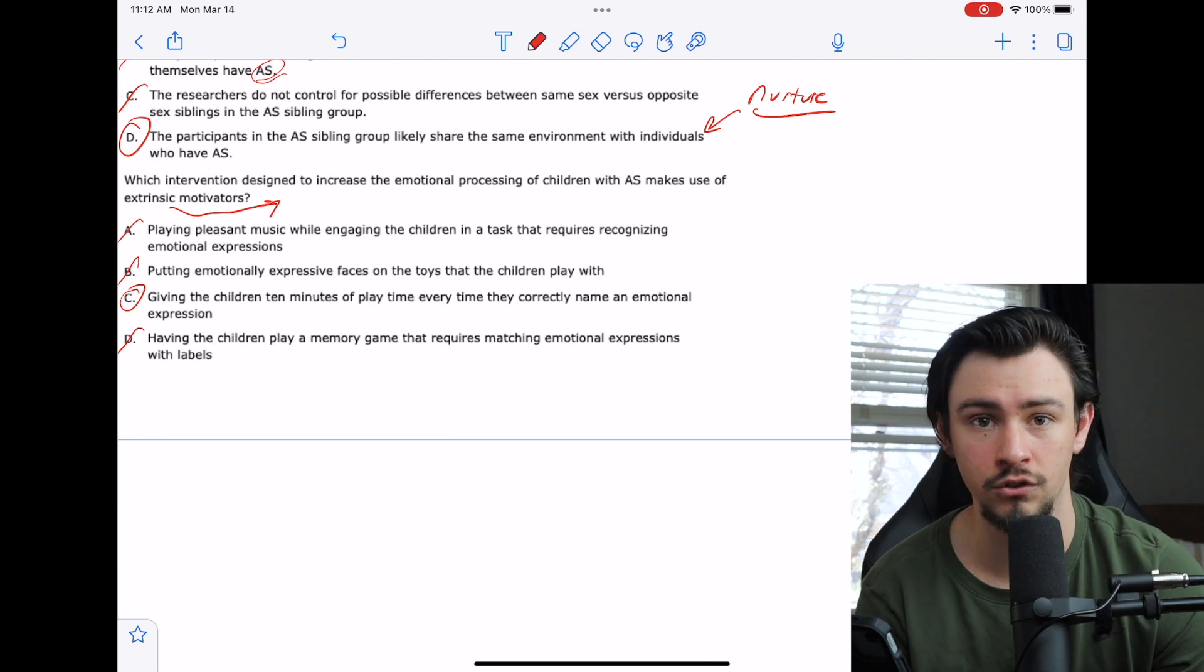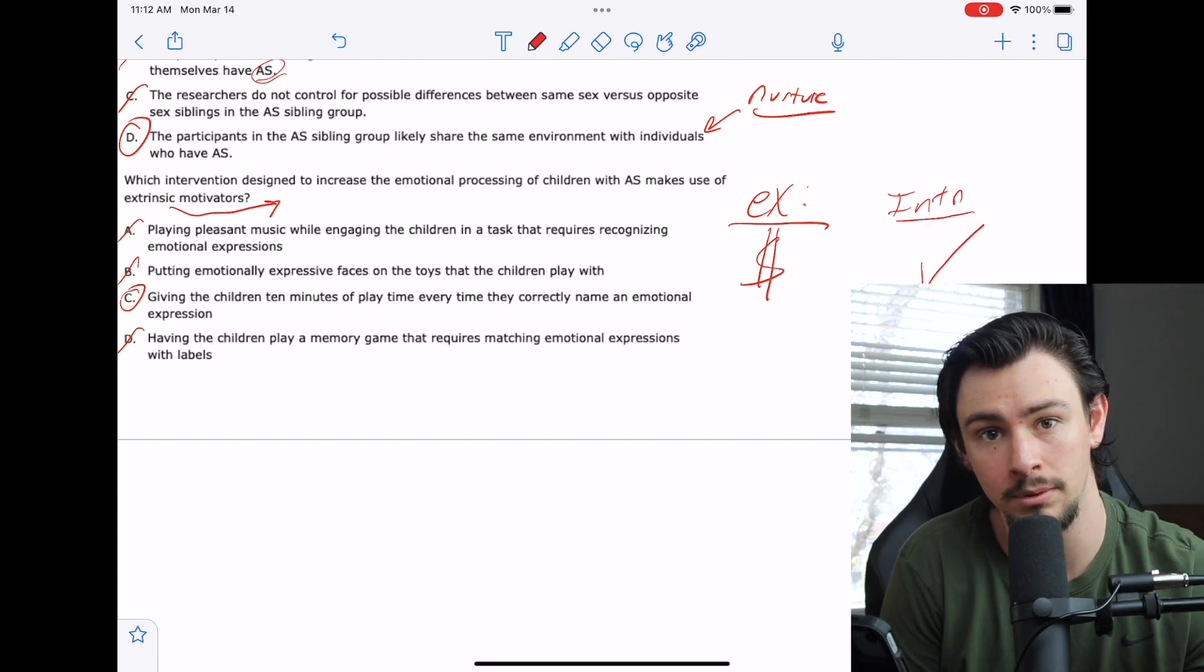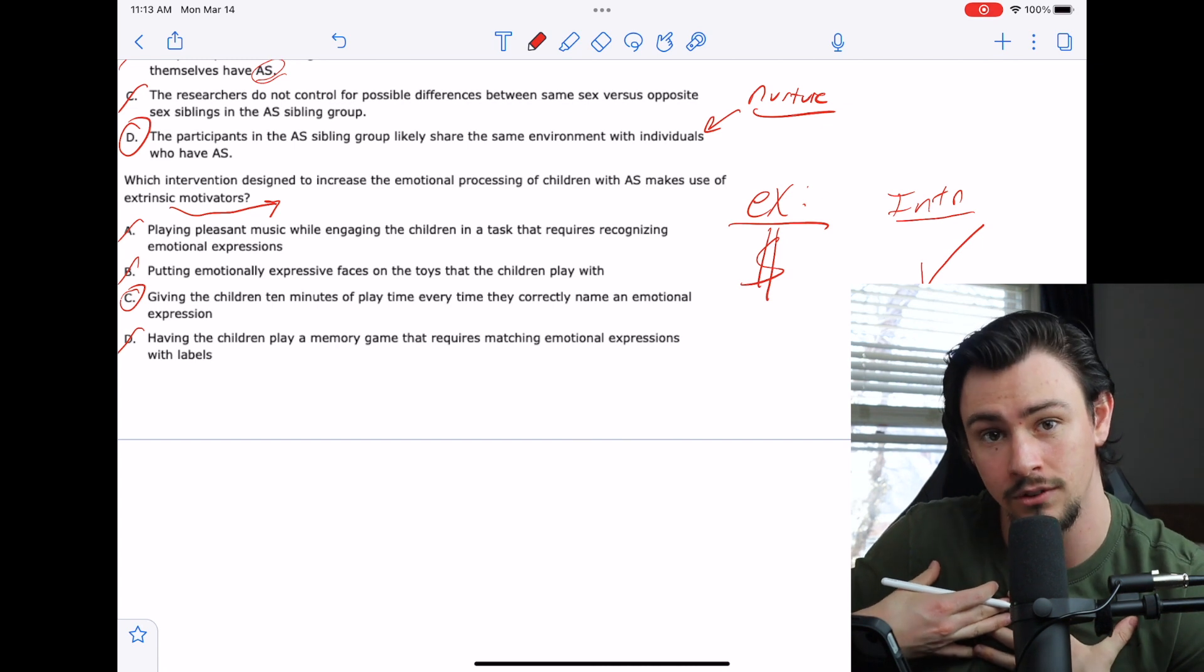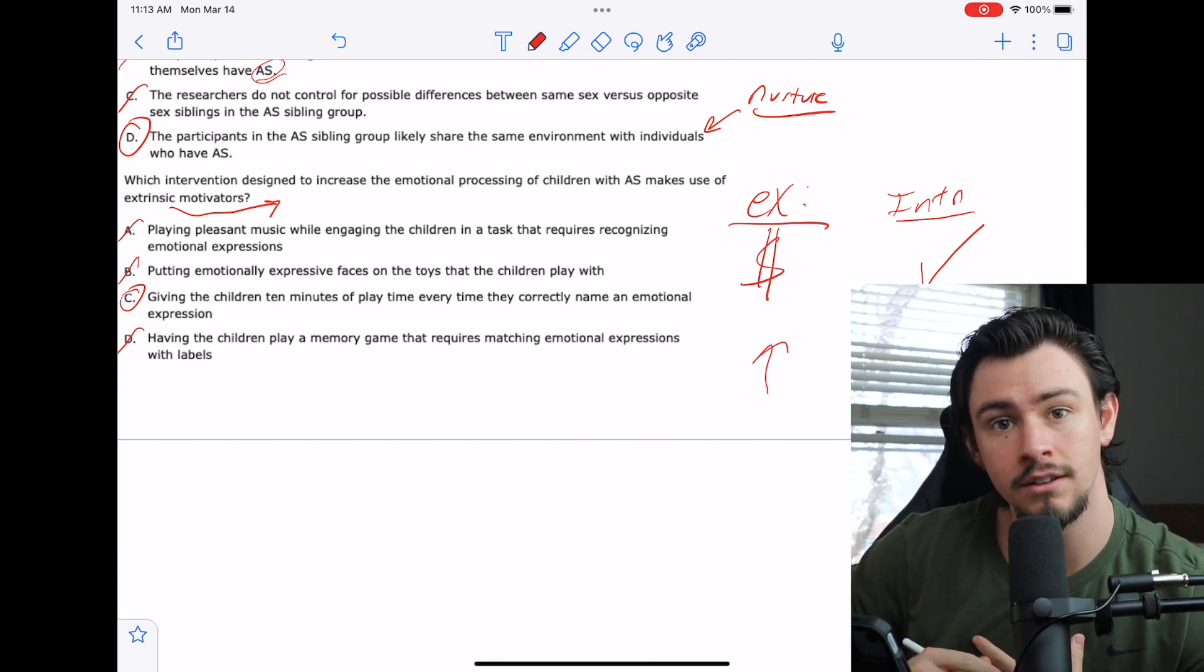A good way to think of extrinsic versus intrinsic motivators is extrinsic is when you get paid at your job. Intrinsic is when you get told good job. This is generally a feeling. It's something that happens inside. It's an intrinsic motivator that spurs you to keep going. This is something that you're given to spur you to keep going.